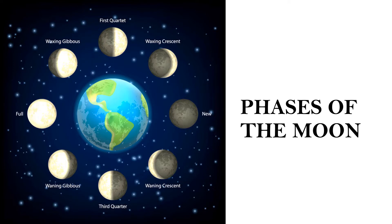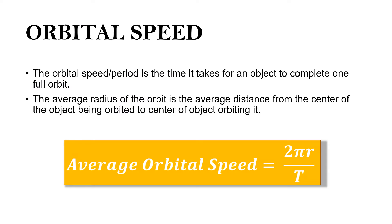These are the phases of the Moon. We can calculate the average speed of an orbit using the equation: average orbital speed is equal to 2πr divided by t, where r represents the average radius of the orbit — the average distance from the center of the object being orbited to the center of the object orbiting it — and t represents the orbital period, which is the time it takes for the object to complete one full orbit.